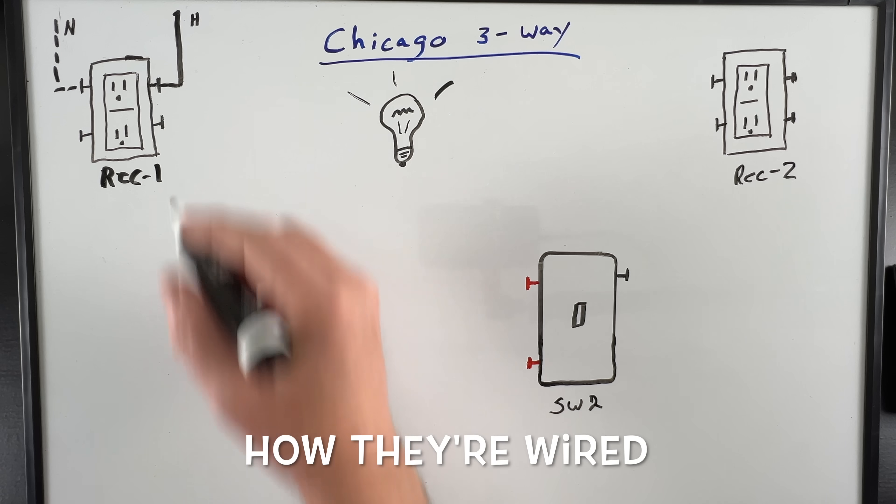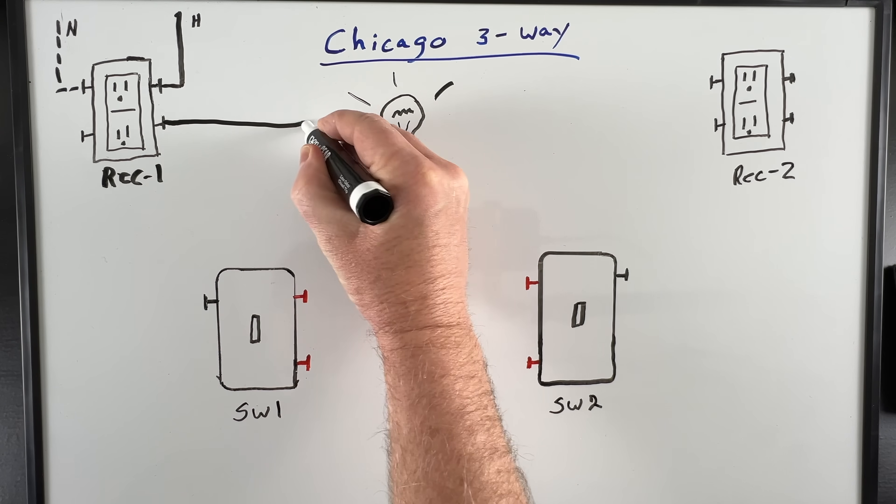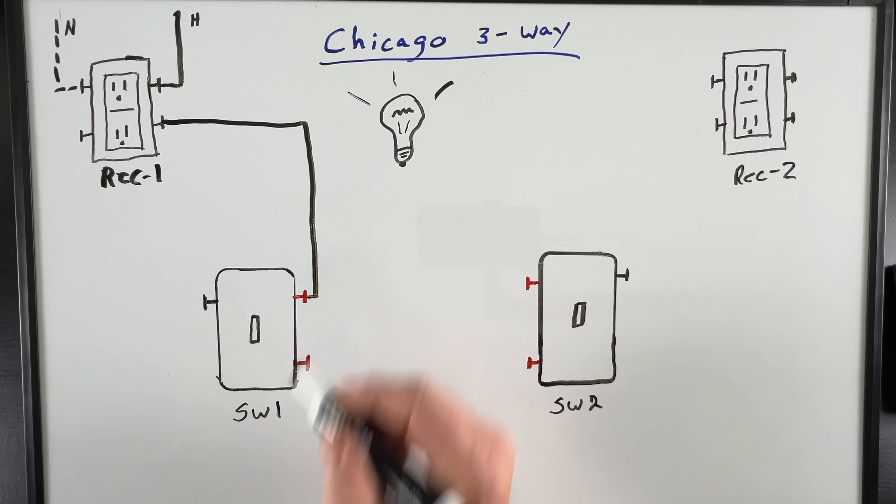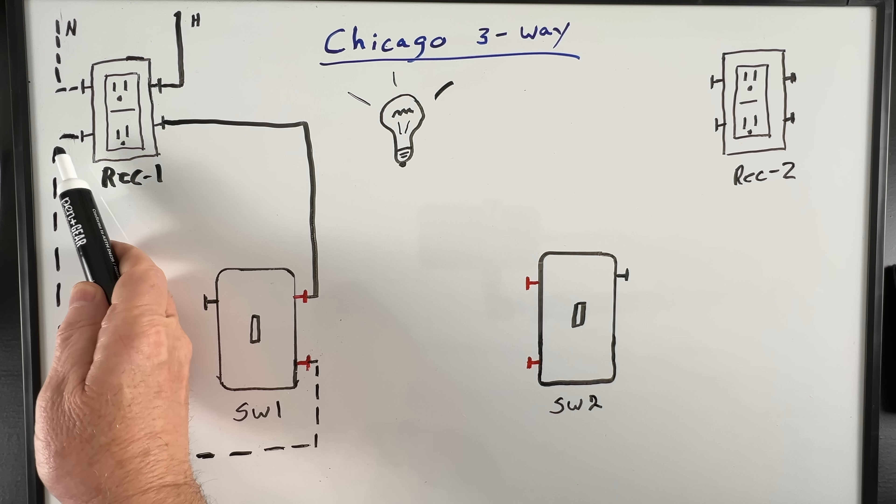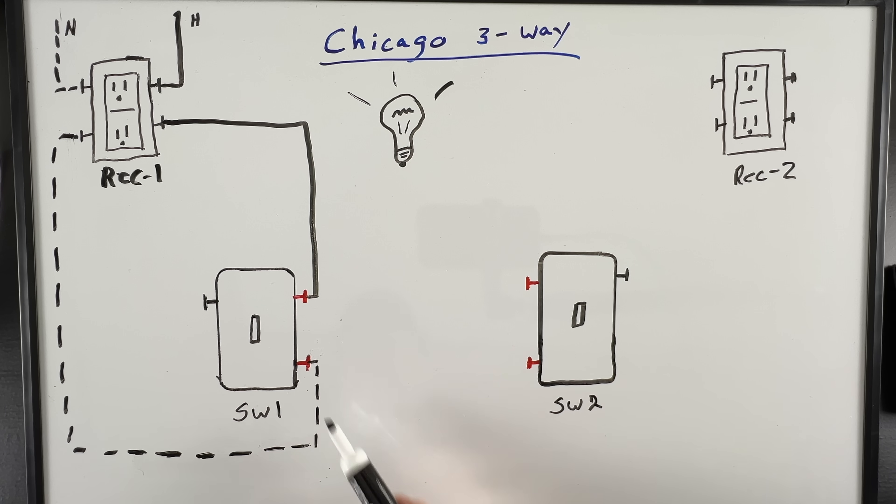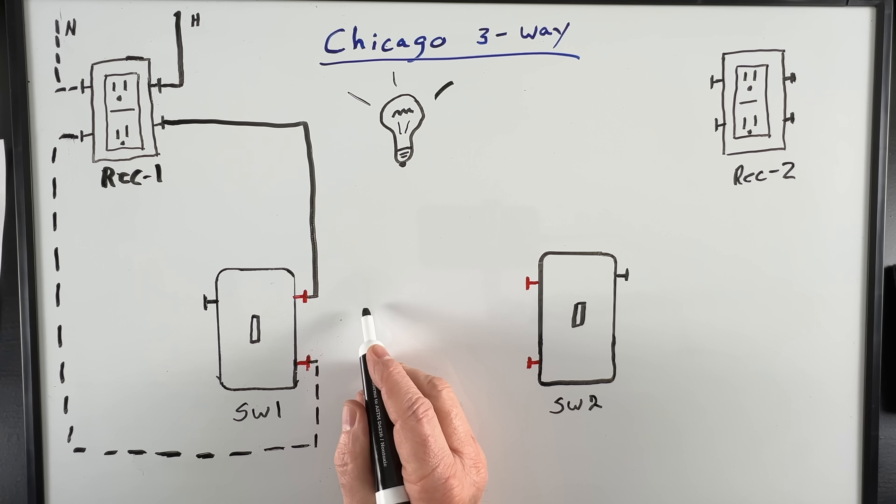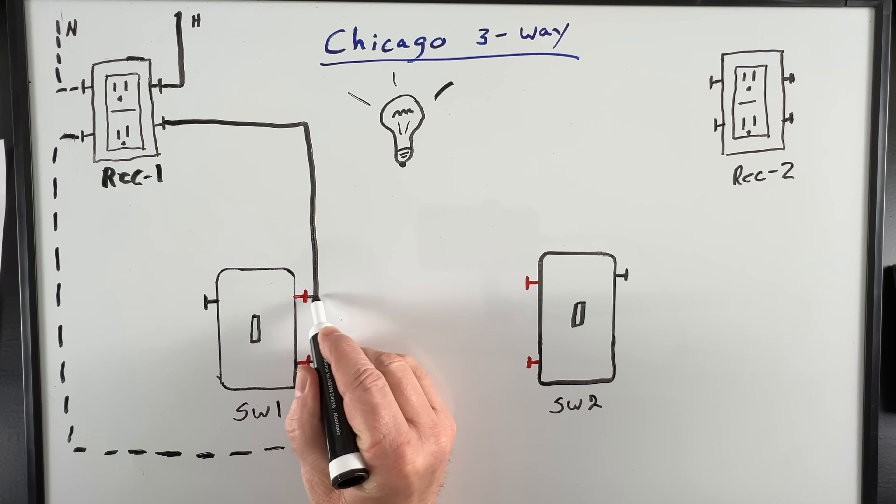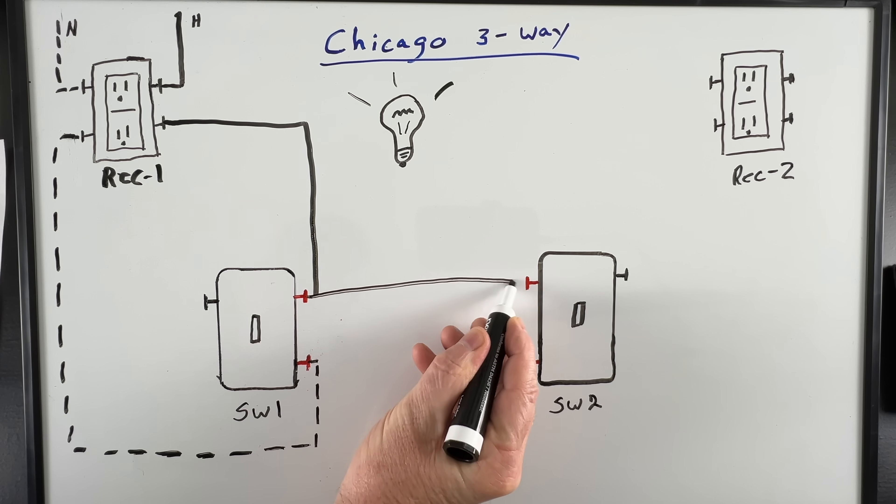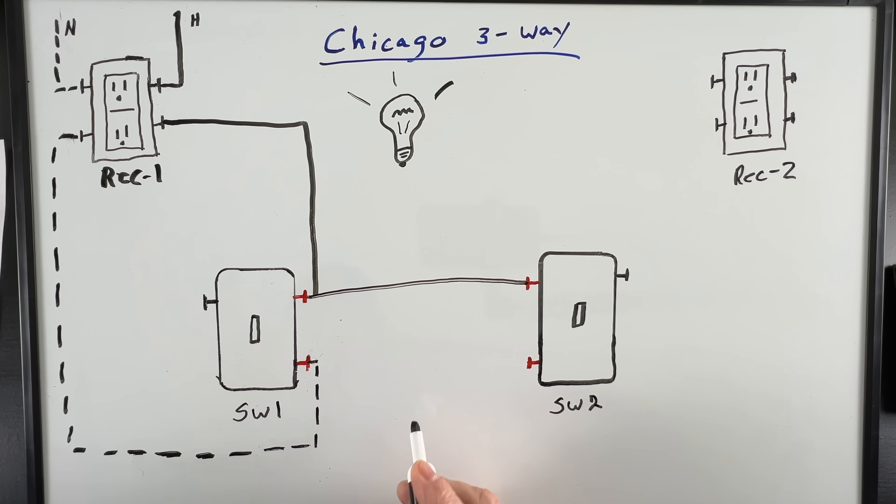We'll take our hot feed wire from receptacle one down to one of the gold traveler screws on switch one. Then we'll take our white neutral wire to the gold traveler screw on switch one. Now we need to connect our switches together. We'll carry our black hot wire from the gold traveler screw on switch one over to the gold traveler screw on switch two.